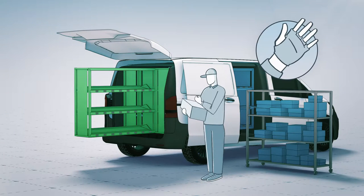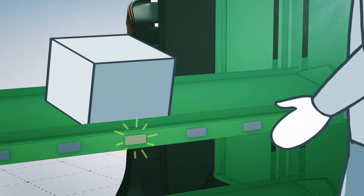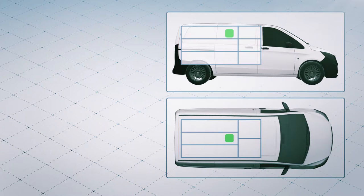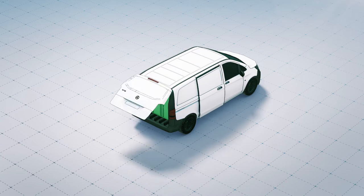Each item is scanned by hand. The put-by-light system signals into which cubby it should be placed, meaning that the system knows not only whether all shipments are in the vehicle, but also exactly where they are.